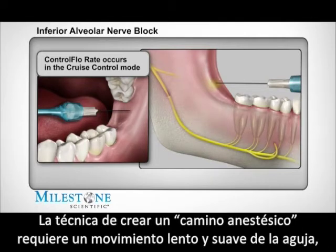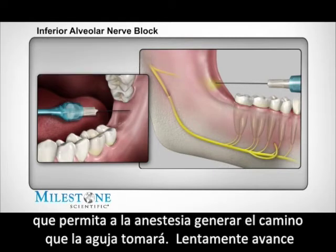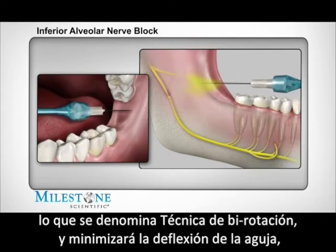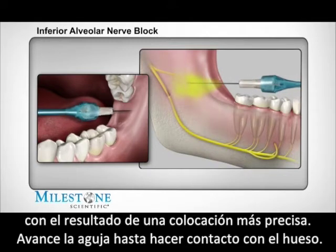The technique of creating an anesthetic pathway requires a very slow and deliberate needle movement, allowing the anesthetic solution to deliberately precede the path that the needle will take. Slowly advance the STA handpiece while simultaneously rotating the handpiece using a back and forth motion. This is called the bi-rotational insertion technique and it will minimize needle deflection, resulting in more accurate placement of the needle tip to the intended target.